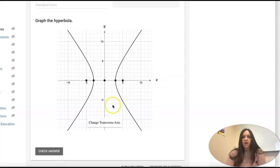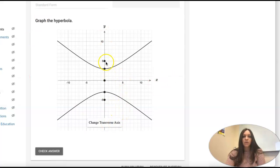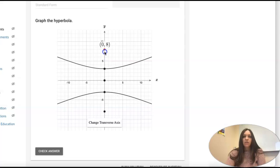So if I go to graph that, I'm going to change my transverse along the y. I don't know what the focus is, but I know that the vertices are 5.